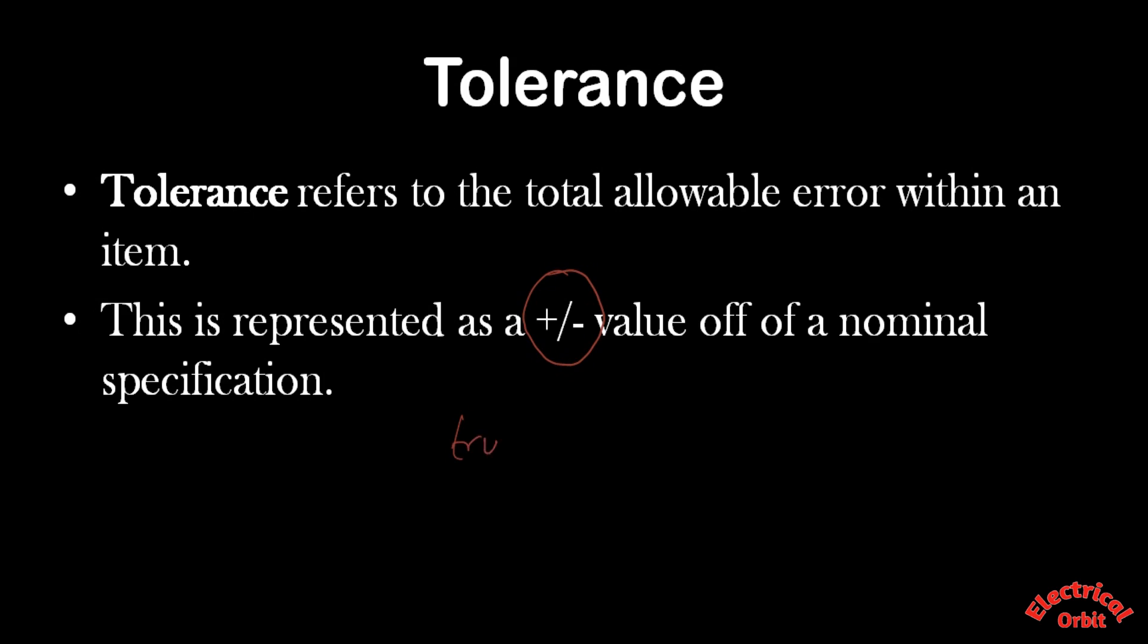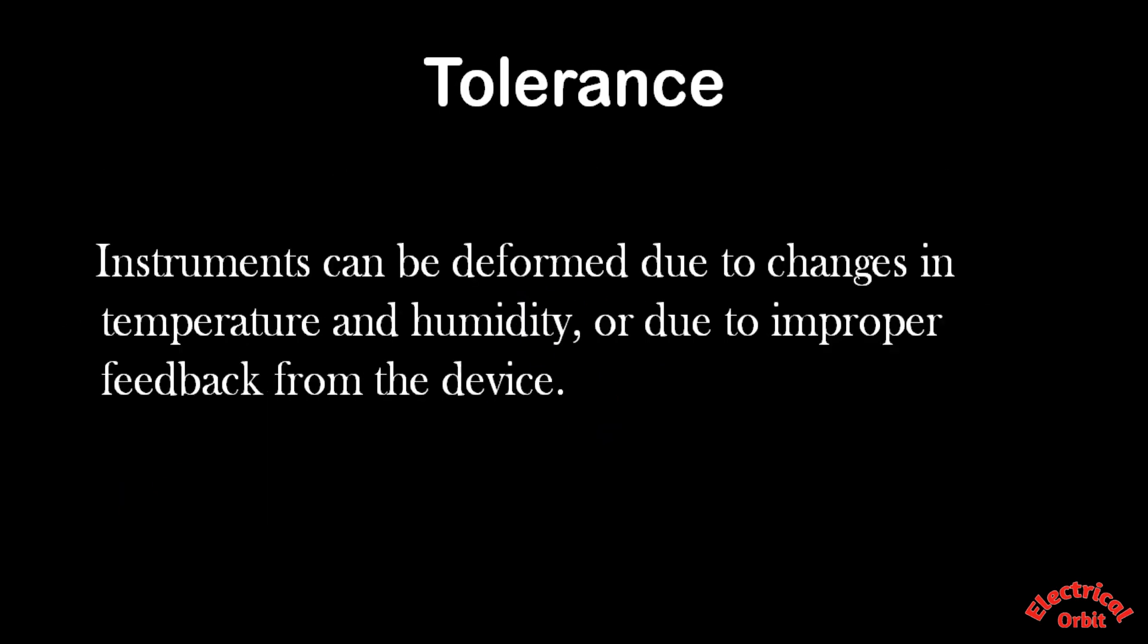Now the reason for this variation of our reading, or the particular instrument which is showing this variation, for which the makers have to declare this tolerance range for the instrument, is due to changes in temperature or humidity.